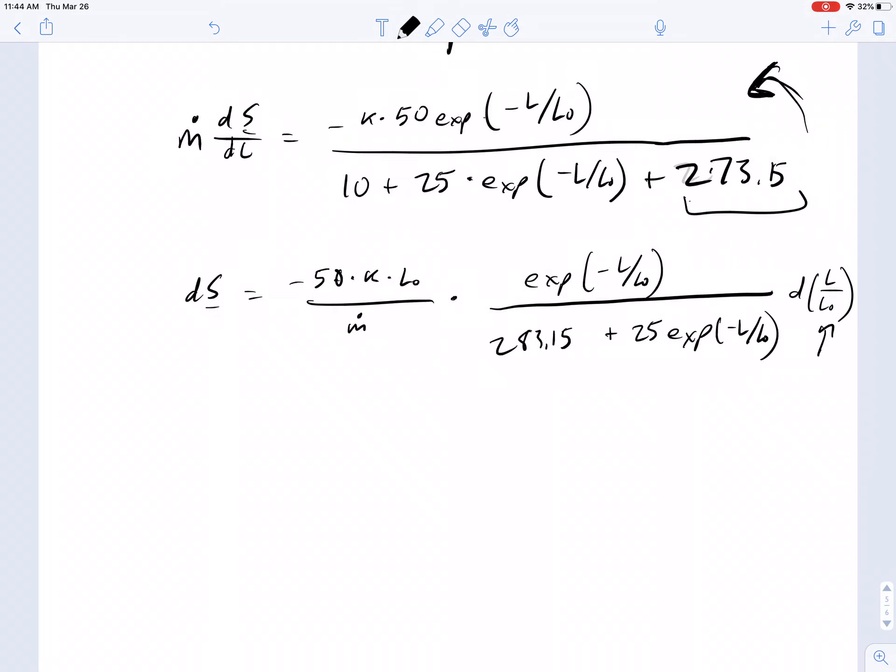When it's in a product, the derivative of a constant is zero, but if it's just multiplied through, it just pulls out the derivative.